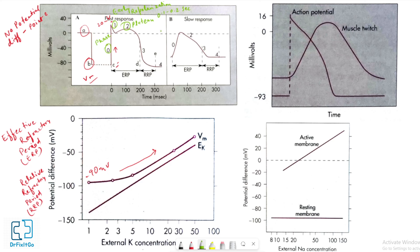The membrane then repolarizes during phase 3 until the resting state of phase 4 is again attained at point E. Final repolarization in phase 3 develops more slowly than depolarization in phase 0. The relationship between the electrical events in cardiac muscle and the actual contraction of cardiac muscle is shown here.